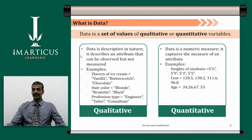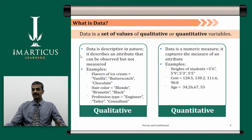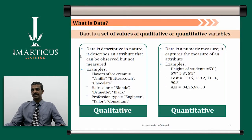There are various ways we can define data. Data is nothing but a set of values of qualitative or quantitative variables — these are the two broad categories. Data in textual or descriptive format is mostly qualitative data, and data that can be measured in terms of numbers is quantitative data. Qualitative data is descriptive in nature; it describes an attribute that can be observed but not measured. For example, flavors of ice cream — vanilla, butterscotch, or chocolate — or hair color — blonde, brunette, or black — or profession type — engineer, tailor, or consultant. These things can only be observed or felt; they cannot be measured. Such data is called qualitative data.